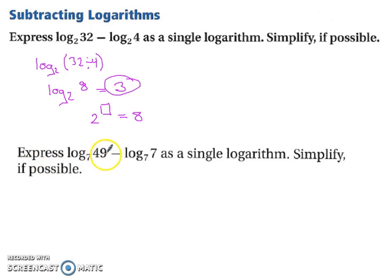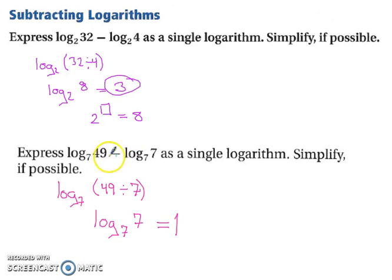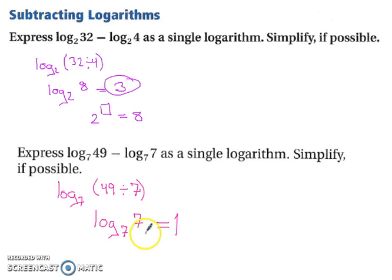We have log base 7 of 49 minus log base 7 of 7 as a single logarithm. Since we subtract our logs to write it as a single logarithm, we divide: 49 divided by 7 is 7. So we have log base 7 of 7. Whenever the base is the same as the argument, the answer is 1, because 7 to the first power gives you 7.